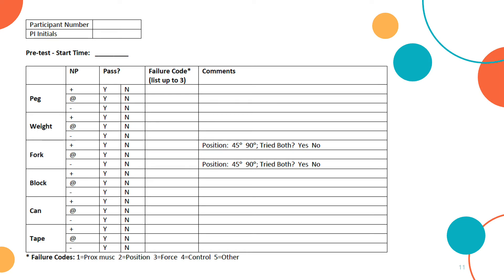GRT pretest scores are recorded on page 2 of the GRT form. Performance with and without the NNP is recorded by plus or minus signs, respectively. The test begins with the three lateral objects followed by three palmar objects. Participants should attempt to grasp the peg, weight, and fork using the NNP in lateral mode, and the block, can, and tape using palmar mode. If a participant cannot pass an object with the prescribed mode, they may try their alternate grasp mode, indicated by the at symbol.